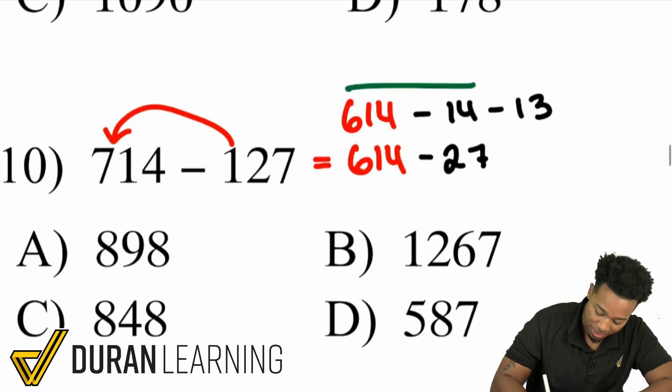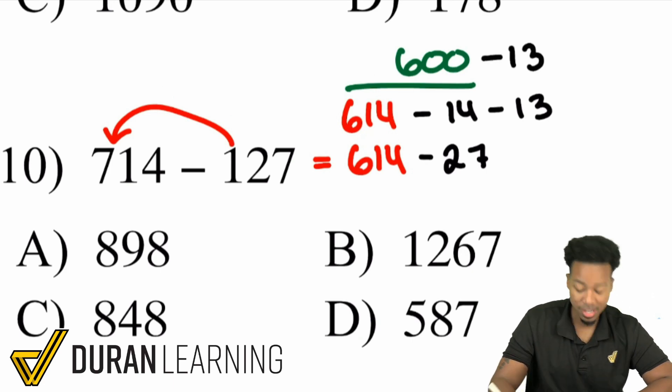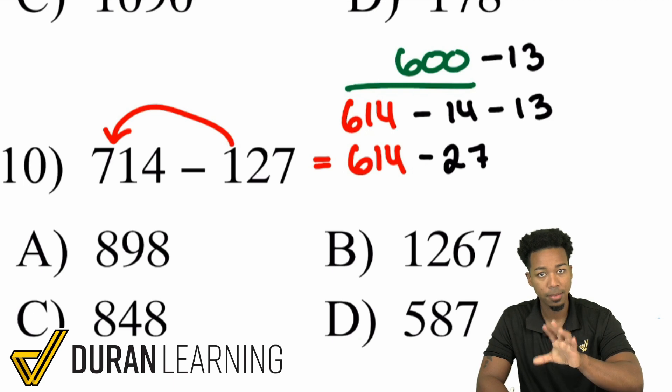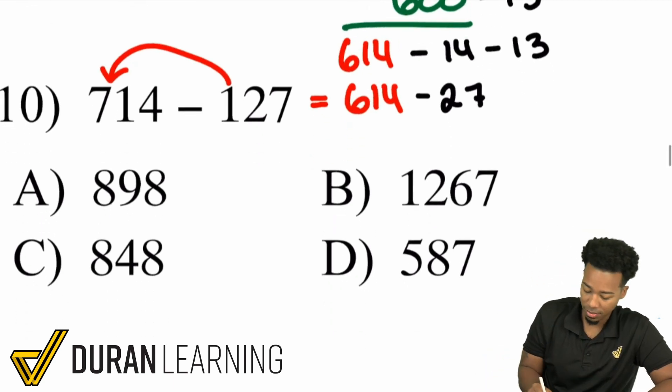I'm going to have this being 600 and then if I take away 13 that's the same thing as taking away 10 and 3. So that'll become 590, 587 right there.